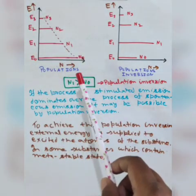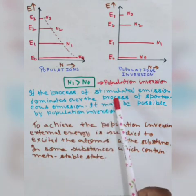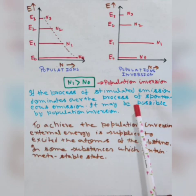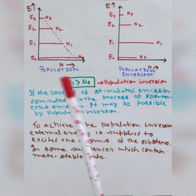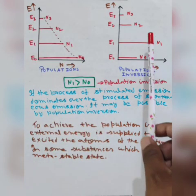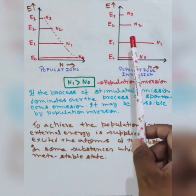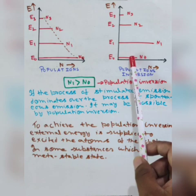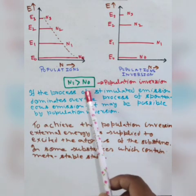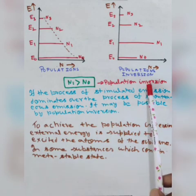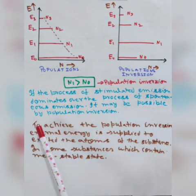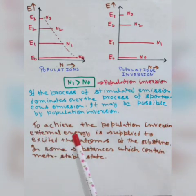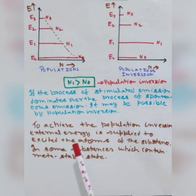But in the case of the laser, stimulated emission must dominate over spontaneous emission. This is possible when the number of atoms in the excited state is more than the number in the ground state — that is, N2 is greater than N1. This condition is known as population inversion. Population inversion is just the opposite of the normal population distribution.